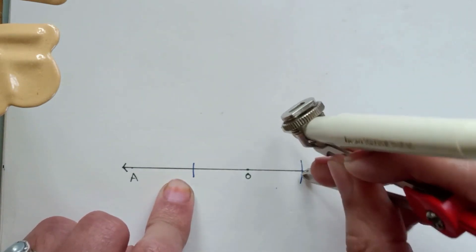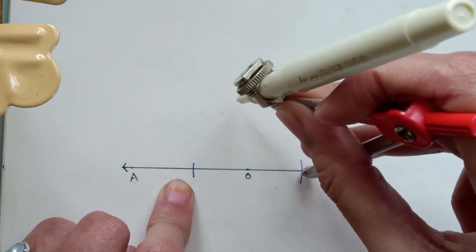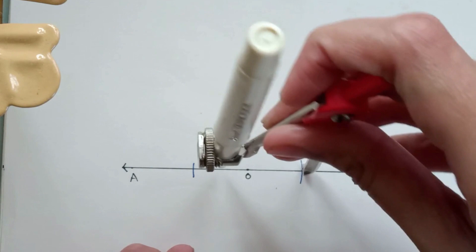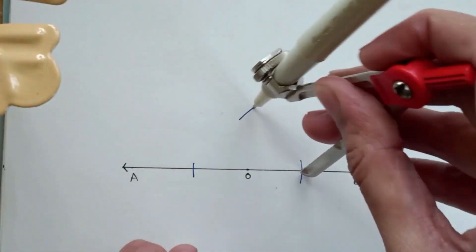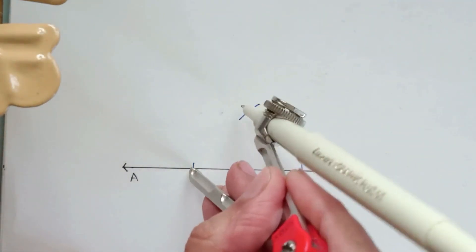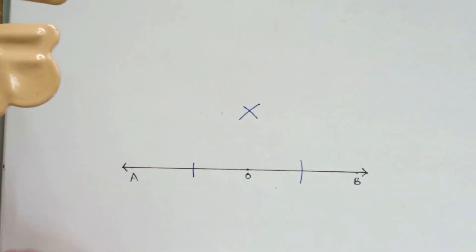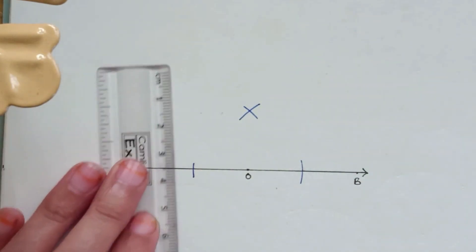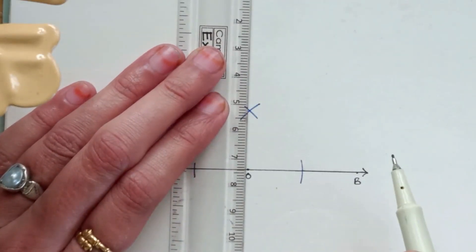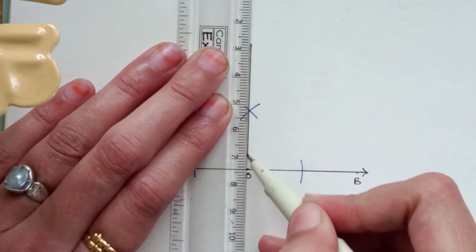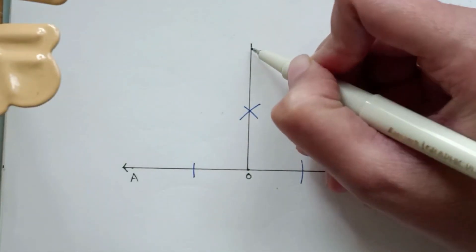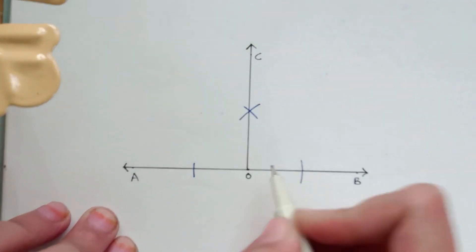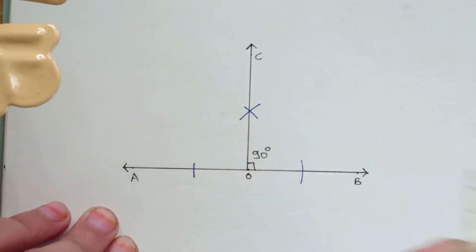Keep the pointer on one of the arcs, take a distance in between these two points, and draw two intersecting arcs from the recently drawn arcs. Now we have to join this point with O. So this line, let us call as OC, will be at 90 degrees. So this is a perpendicular line to AB.